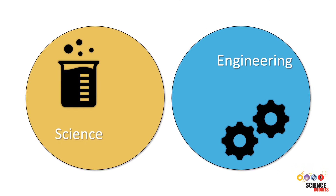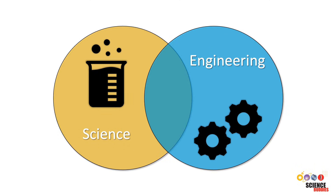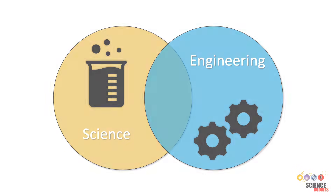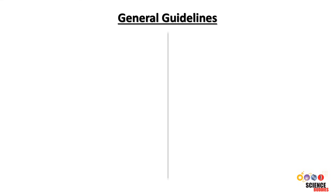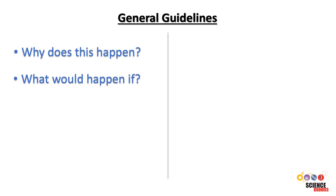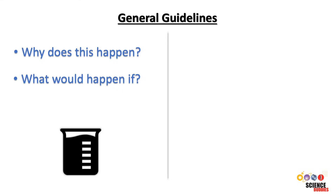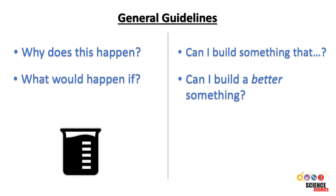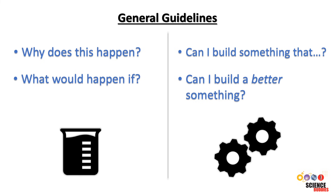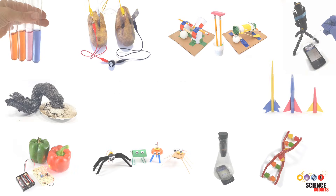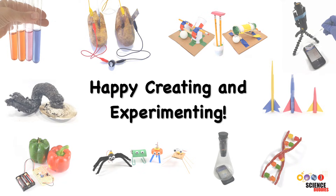There are many other problems or projects where science and engineering can be combined. When you are not sure which process to use for a project, follow these general guidelines. If you ask 'why does this happen?' or 'what would happen if?' you need to follow the scientific method. If you ask 'can I build something that…' or 'can I build a better something?' you need to follow the engineering design process. Thanks for watching, and happy creating and experimenting!